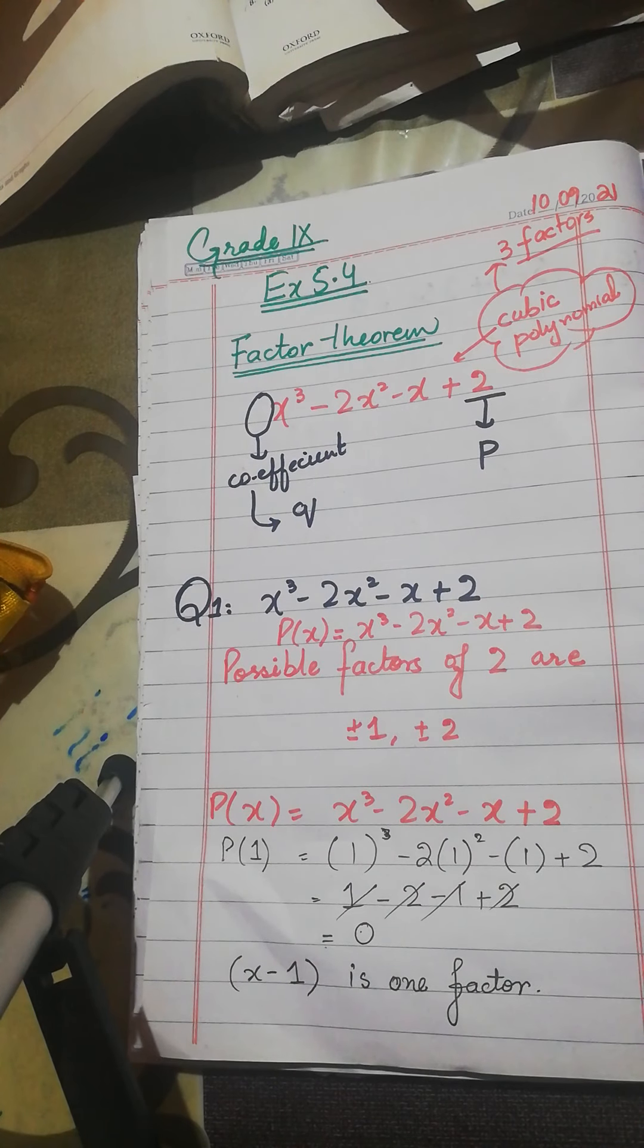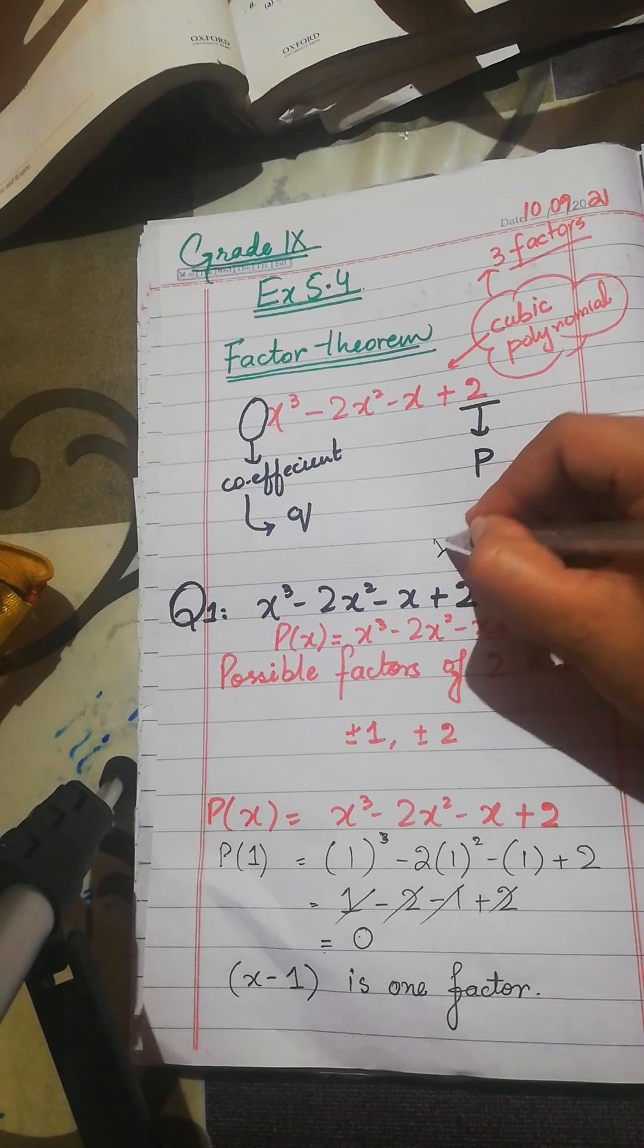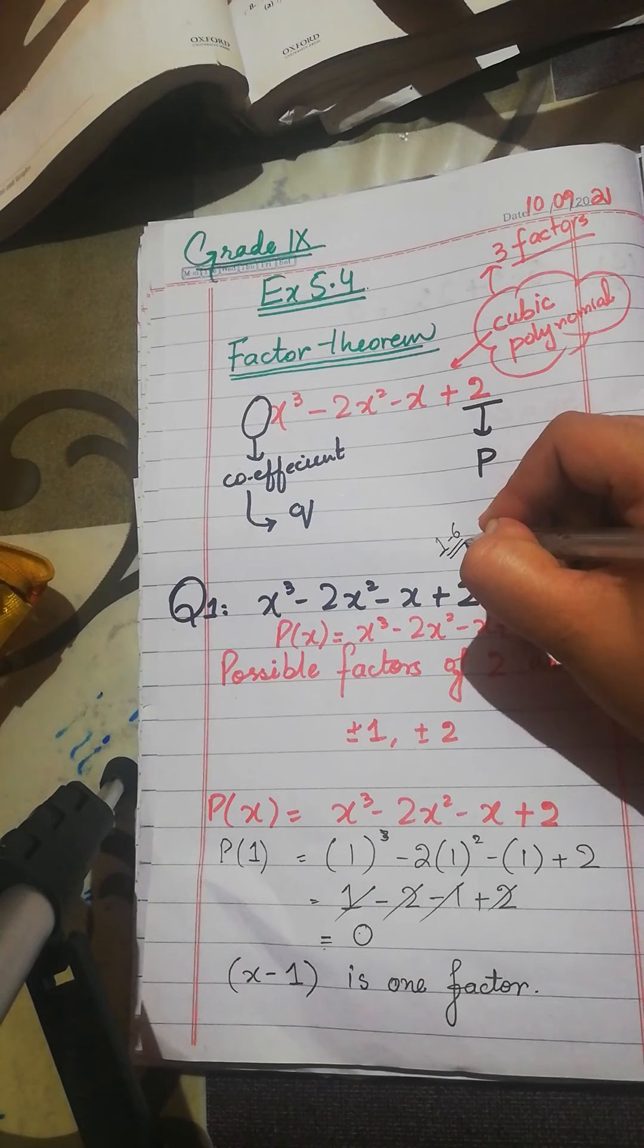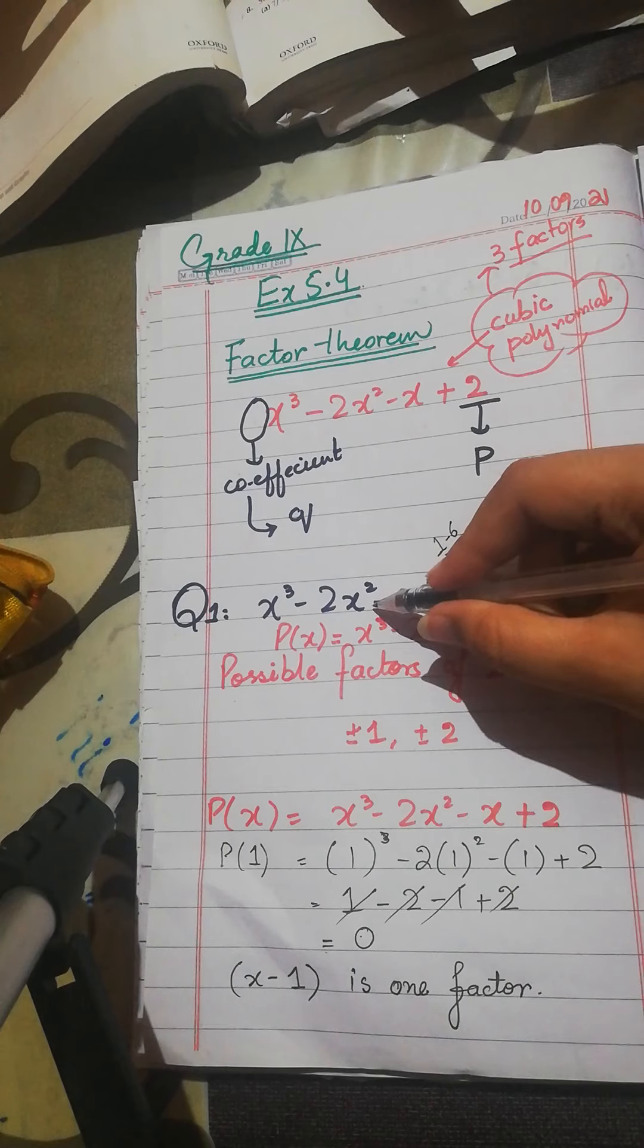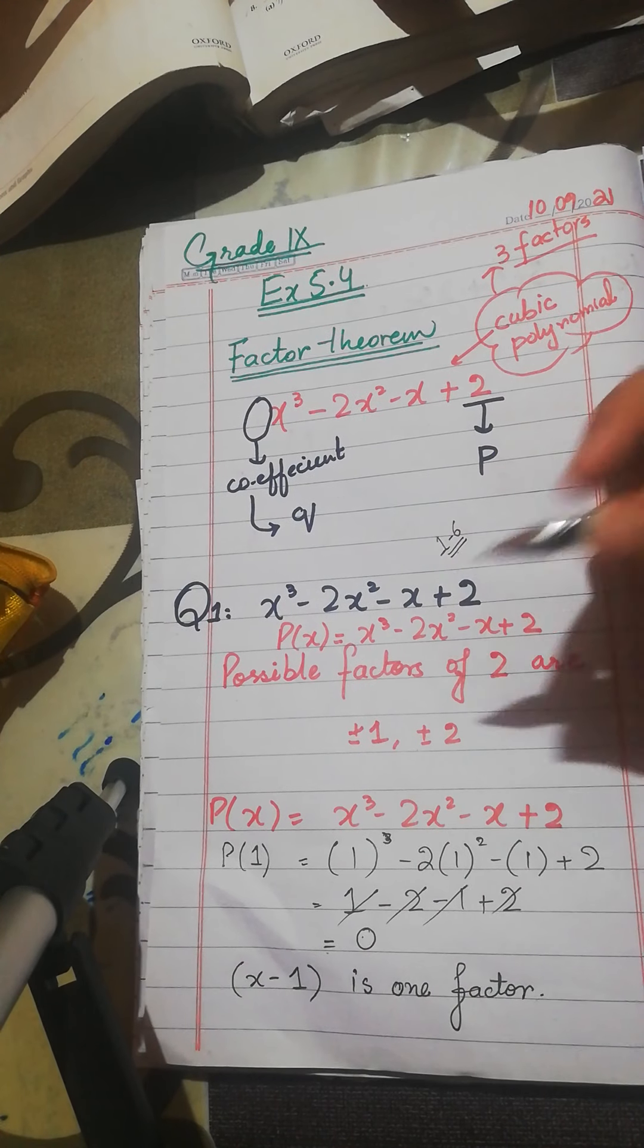There are 8 questions. Today, we have questions from question number 6. From question number 1 to 6, there are all questions in one pattern. I am showing you one question. The remaining 5, you have to do it. There are 7 and 8 questions. We will do it in the next lecture.